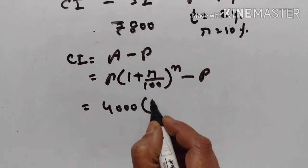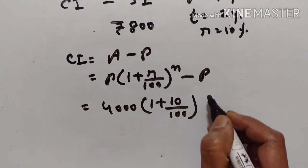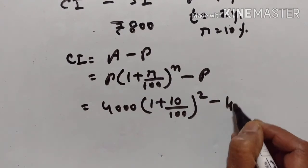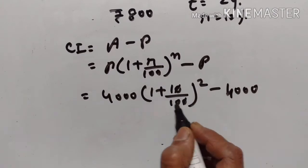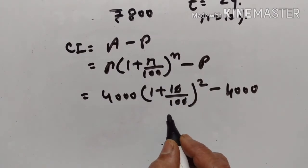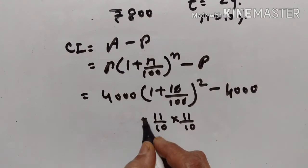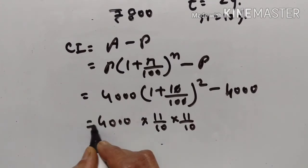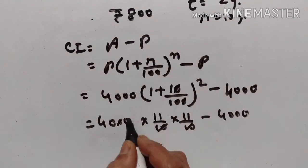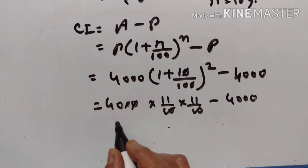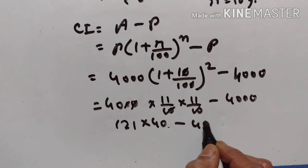4000 into 1 plus 10 upon 100, rate is 10%, number of years is equal to 2. This is 11 upon 10, into 11 upon 10, into 11 upon 10. The 2 zeros go off, giving 121 into 40 minus 4000.